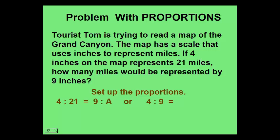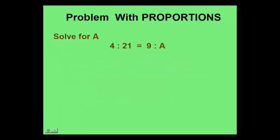We could also set this proportion up by putting a ratio of inches on one side. So 4 inches to 9 inches would be equal to 21 to A miles. Either one would give us the correct answer. We'll solve for A using the proportion 4 to 21 equals 9 to A.